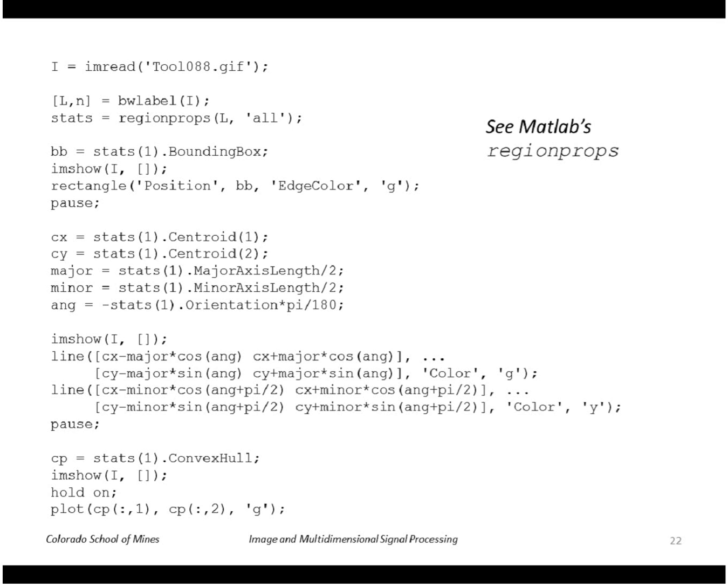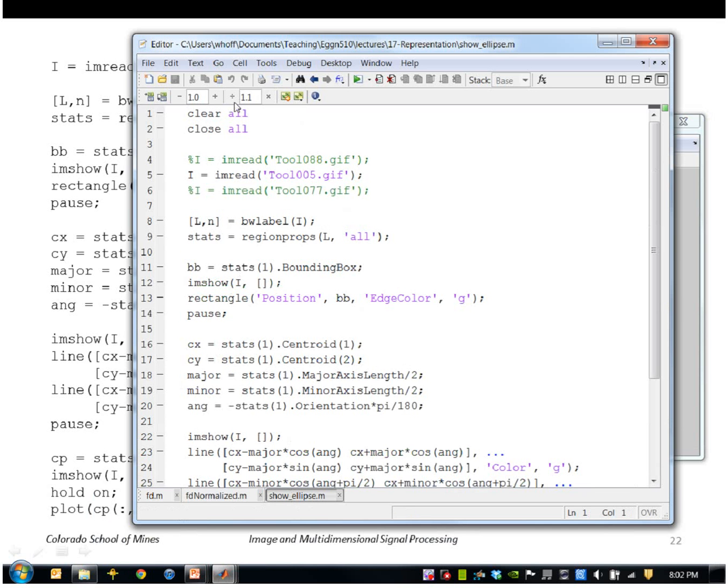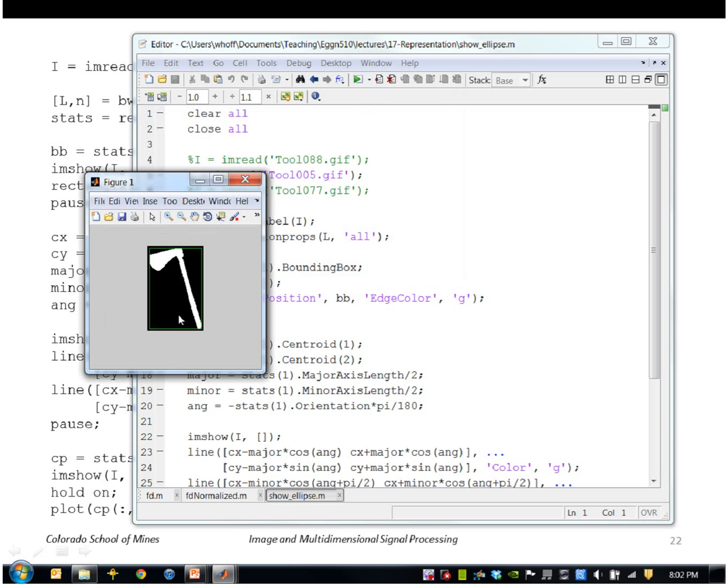Here's how to do that in MATLAB. Here I have a tool. I've extracted the region properties using region props. I can show the bounding box, the centroid. It gives you major axis length, minor axis length, and orientation, and also the convex hull. So here is this. Okay, so this is the bounding box of that region. This is the major and minor axes centered at the centroid. And this is the convex hull as shown here.